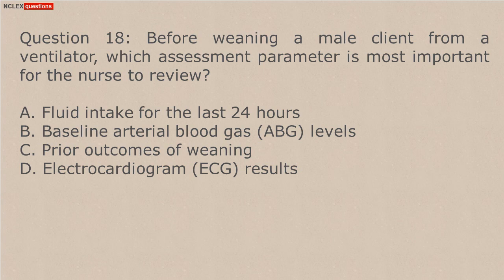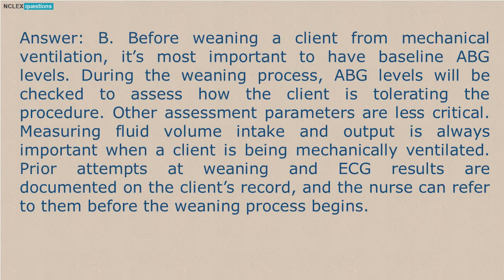Question 18. Before weaning a male client from a ventilator, which assessment parameter is most important for the nurse to review? A. Fluid intake for the last 24 hours. B. Baseline arterial blood gas (ABG) levels. C. Prior outcomes of weaning. Answer B. Before weaning a client from mechanical ventilation, it's most important to have baseline ABG levels. During the weaning process, ABG levels will be checked to assess how the client is tolerating the procedure. Other assessment parameters are less critical. Measuring fluid volume intake and output is always important when a client is being mechanically ventilated. Prior attempts at weaning and ECG results are documented on the client's record, and the nurse can refer to them before the weaning process begins.